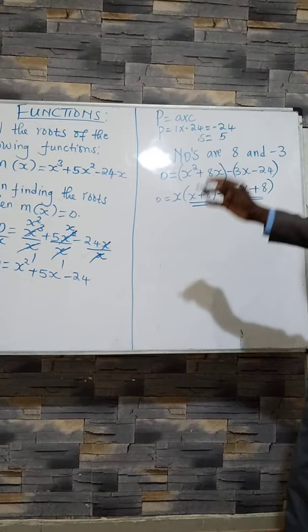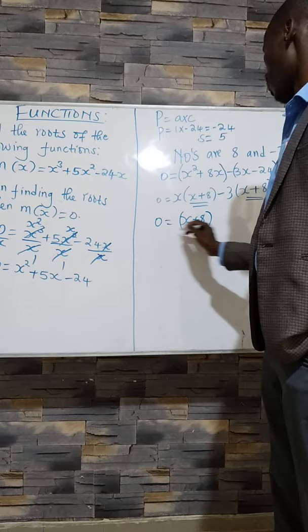These terms are the same, so we pick one of them. We have (x + 8)(x - 3) = 0.